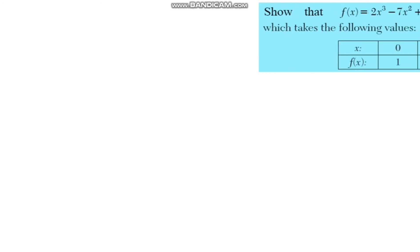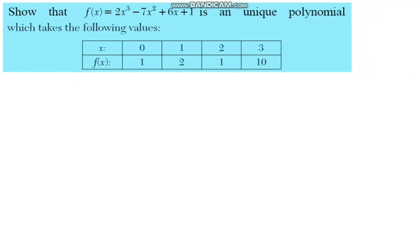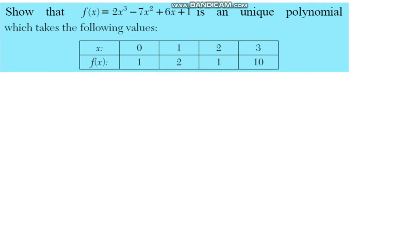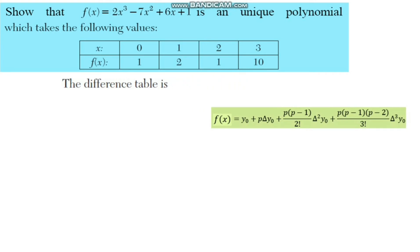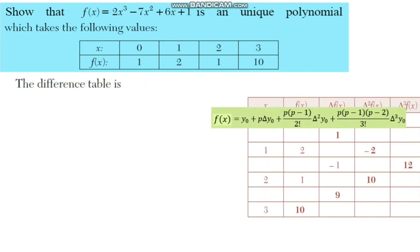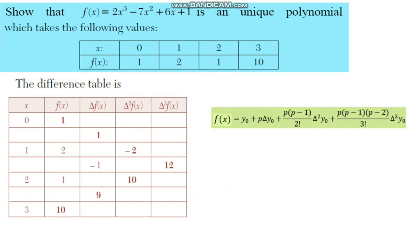Show that f(x) = 2x³ minus 7x² plus 6x plus 1 is a unique polynomial taking the given values. We use Newton's forward interpolation formula since the data is at equal intervals. We construct a difference table: the first column has x values, the second has f(x) values, and the third has the first forward difference values.